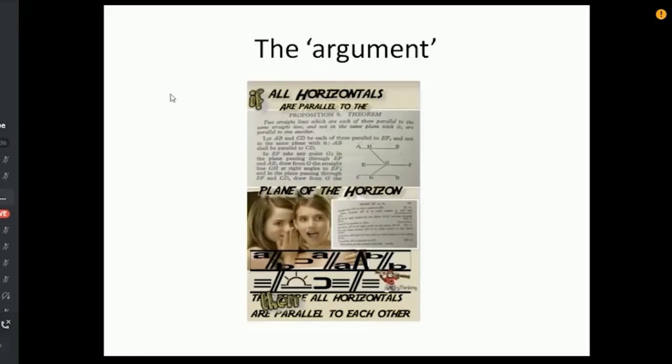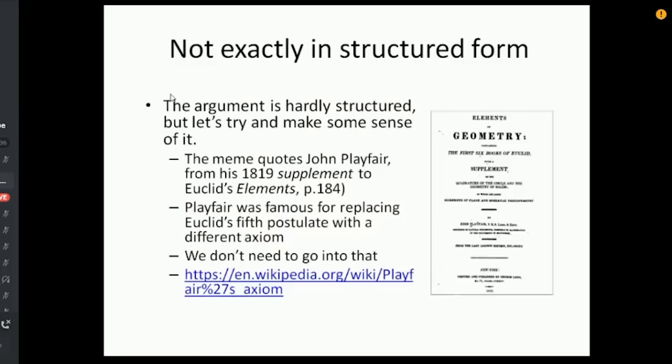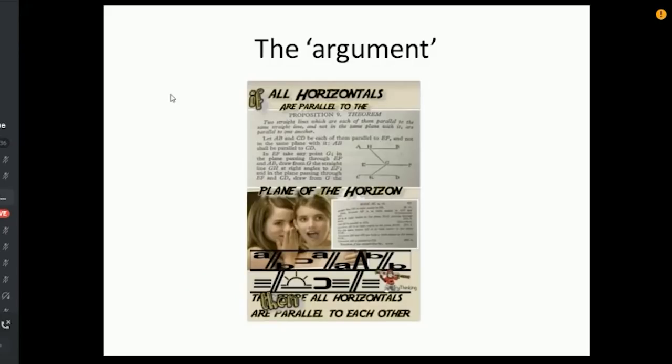Right, you see this sort of two teenage girls chatting, just above there there's a sort of an older looking academic document that says Proposition 9 Theorem. Bev later, he did a presentation last night, Bev later said that was from Euclid, but actually it's not really, because it's actually directly quoting John Playfair from his 1819 supplement to Euclid's Elements. You can see the title page of that book on the right.